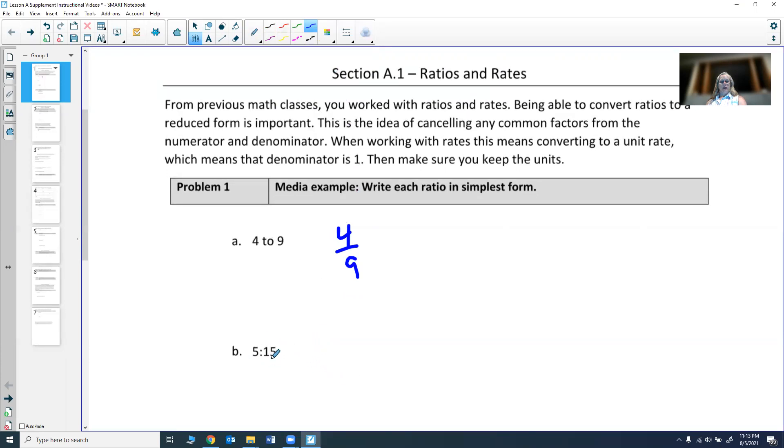Let's try another one. 5 colon 15. That colon really means the same as 'to', so it's just another way to write the exact same problem. So we're going to write 5 first, to 15. We do notice that has some common terms.